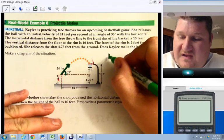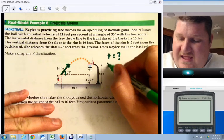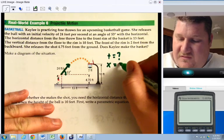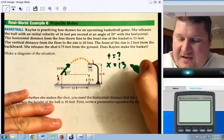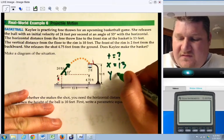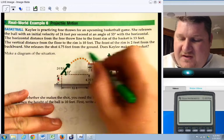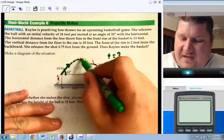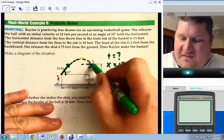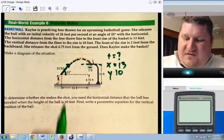The question becomes, at some time, do we have an x that is equal to 13 feet, I guess technically greater than 13 feet, while y is going to be 10 feet? So do we have this point of intersection between the path of the ball and the height of the rim? That's the intersection point that we're going to be looking for.